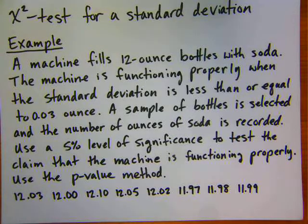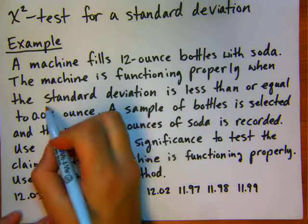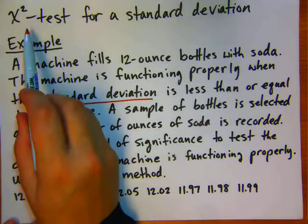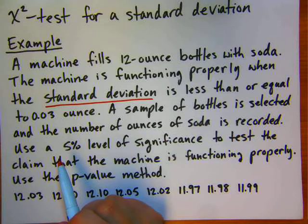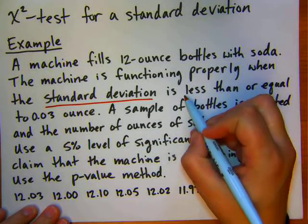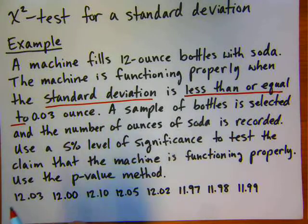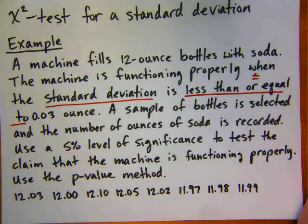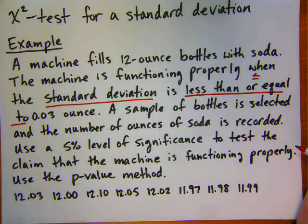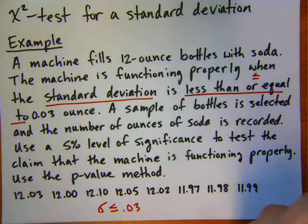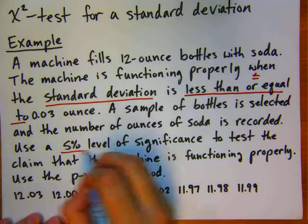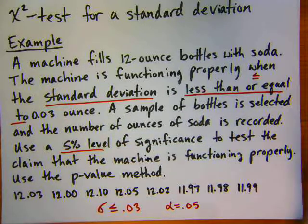Use a 5% level of significance to test the claim that the machine is functioning properly using the p-value method. The first thing we need to do is look at what parameter we're making a claim about — here it's standard deviation, which is why we know it's a chi-squared test. If it's about a mean, it may be a z or t test. If it's about a proportion, it would be the one proportion z test. The key words 'less than or equal to' will set up our hypothesis statements, and alpha equals .05.